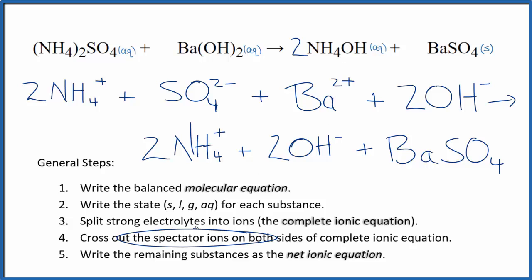Now we can cross out the spectator ions. In the reactants, I have two ammonium ions, and I also have two ammonium ions in the products. Those are spectator ions, so we'll cross those out.